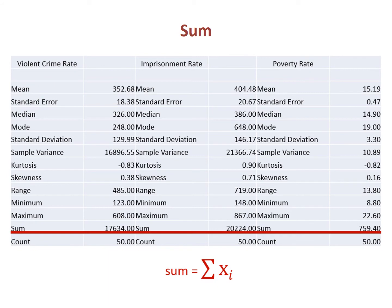Add all the values together and we get the sum. The equation uses X subscript i, meaning the ith value of the variable. There are a total of 50 possible i's, one for each observation. The squiggly symbol is the Greek letter sigma, capitalized. In mathematical notation, sigma stands for sum. Thus, the equation says we should add the values of all 50 observations together to get the sum for each variable.